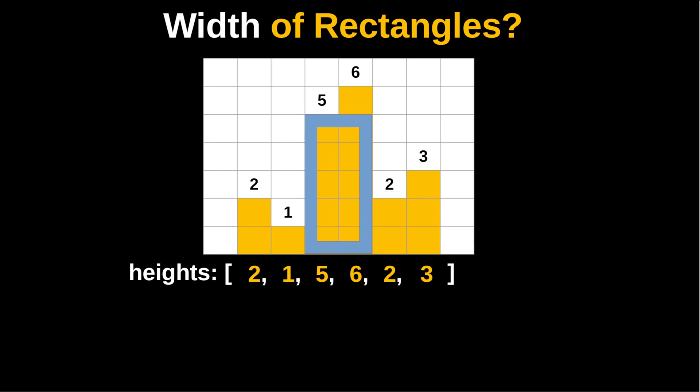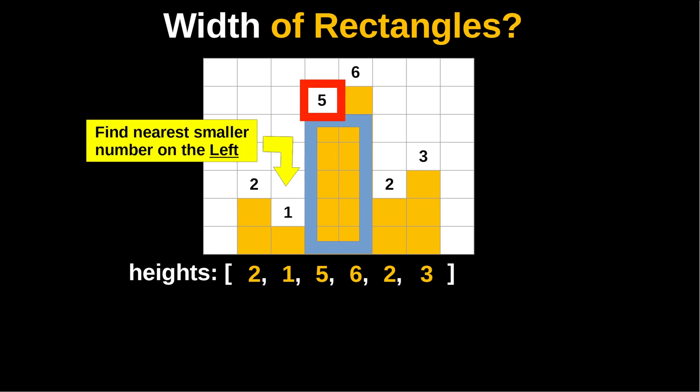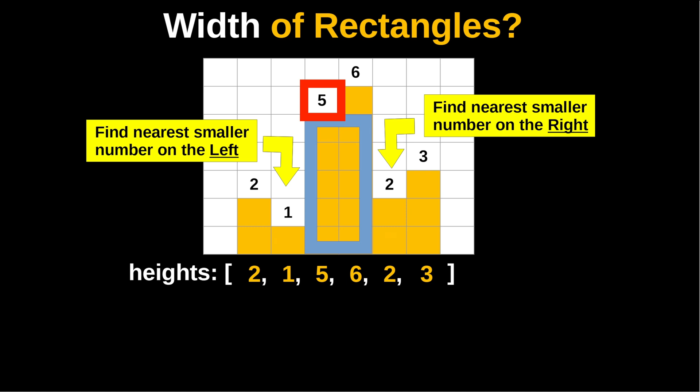Since the width of the rectangles is defined by a pair of indices, we can go through all possible pairs of indices, find the minimum height within those pairs, and figure out the rectangle within that boundary. That is not a bad solution — it is an O(n²) solution. The other approach is to find the nearest smaller number on the left and on the right for each bar.